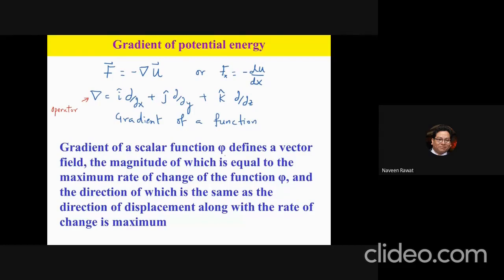The gradient acts on a scalar function — that is very important. If the scalar function is φ, the gradient defines a vector field whose magnitude equals the maximum rate of change of that function, and whose direction is the direction along which the rate of change is maximum.